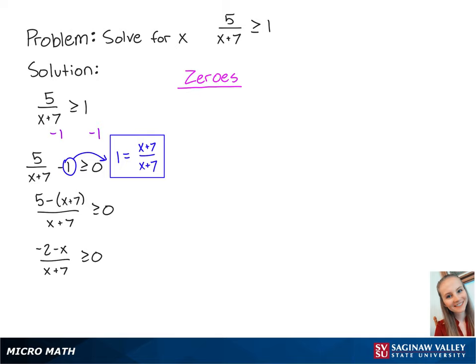Now we can find the values of x that make the left side of the inequality equal to 0 using the equation negative 2 minus x equals 0. Solving for this equation, we get x equals negative 2. We can also find the values of x that make the inequality undefined using the equation x plus 7 equals 0. Solving this equation, we get x equals negative 7.